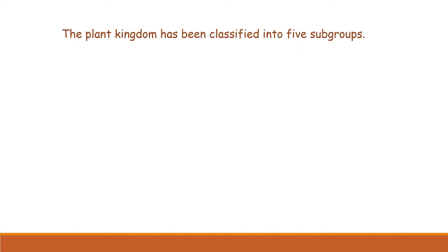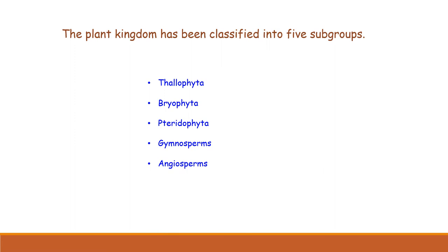The plant kingdom has been divided into five subgroups based on these three criteria: Thallophyta, Bryophyta, Pteridophyta, Gymnosperms, and Angiosperms. These are the five groups into which plants are classified.